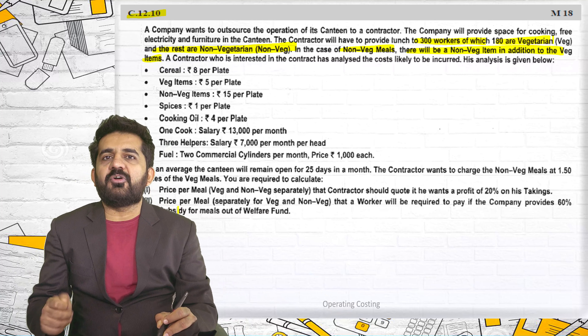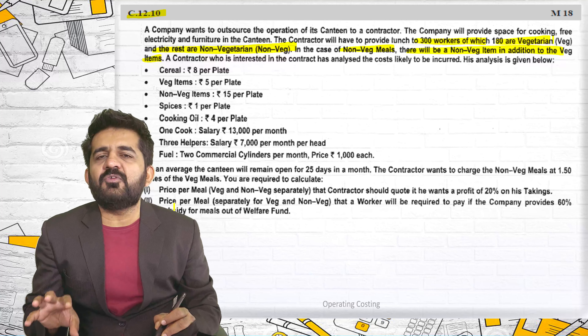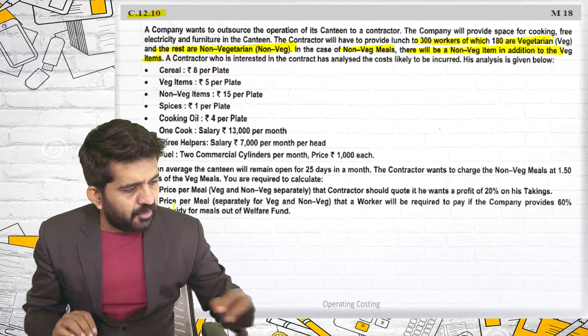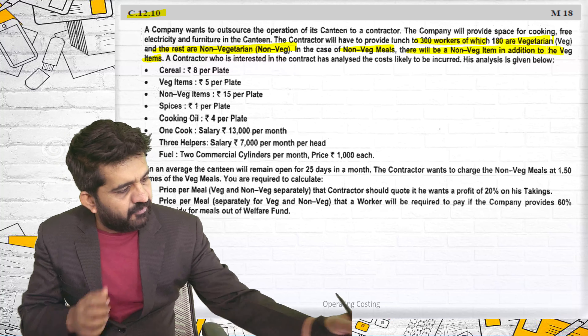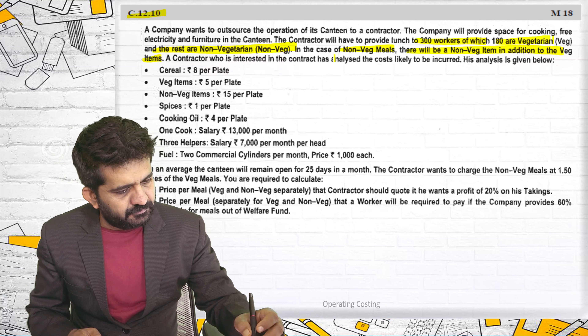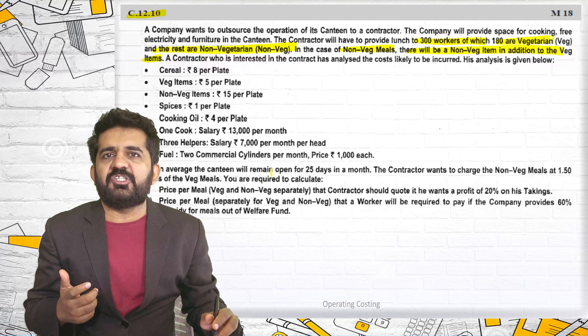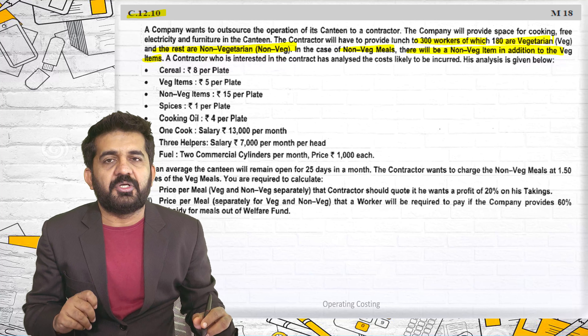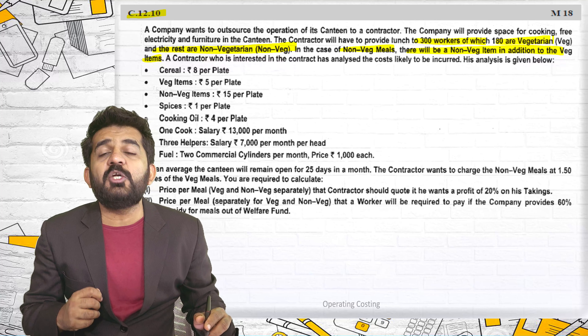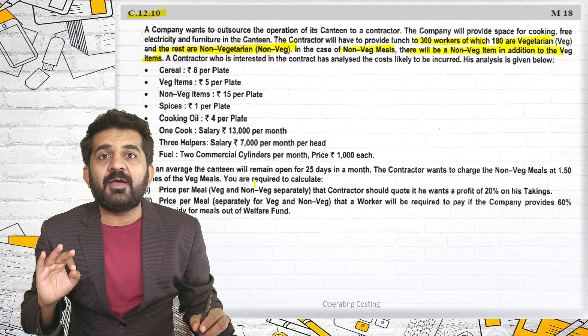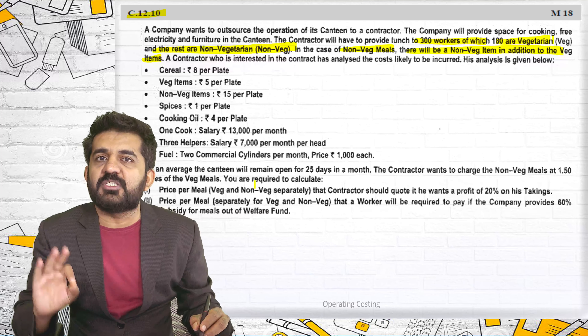So what will happen — the contractor will be cooking all vegetarian items for all 300 people. But for 120 non-vegetarian people (total 300 minus 180 veg equals 120 non-veg), the contractor will have to prepare one more item, which is a non-veg item.